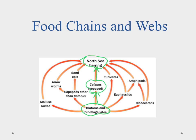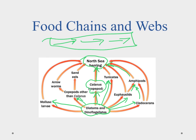In the ocean it doesn't work so simply. The photosynthetic organisms are fed on by various zooplankton, tunicates, mollusk larvae, and clitocerians. Those in turn are fed on by organisms like amphipods, and then up to the North Sea herring, which is our apex predator in this example. A food chain is a straight shot from one organism to another, but when we link all of these together, we end up with a food web. Good luck on your quiz, and we'll see you in the next video.